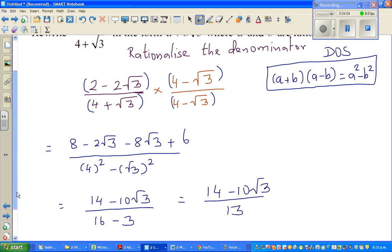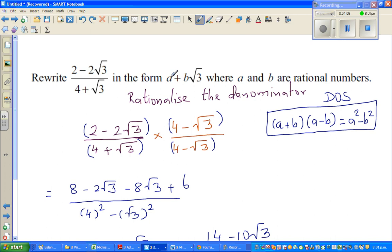Now the question is, you want to write in this form. You have to have an a, you have to have plus b times root 3, and a and b are rational numbers. Rational numbers are numbers which can be written as a fraction. Rational number to express any number which can be written as a over b, of course b should not be 0.